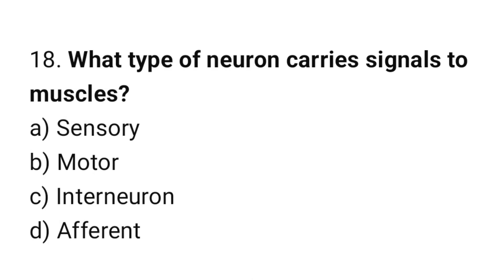Question number 18: What type of neuron carries signals to muscles? The correct answer is B: Motor.